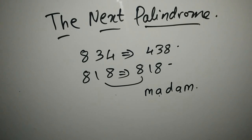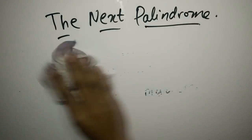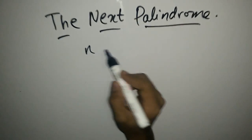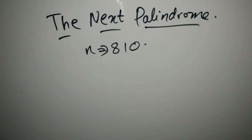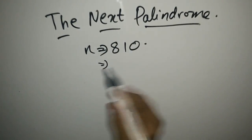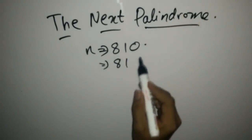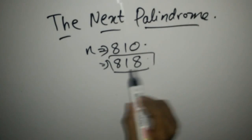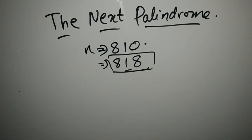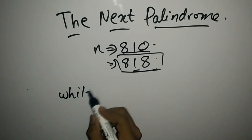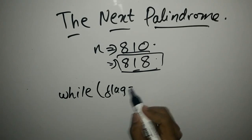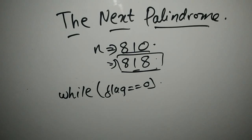In this CodeChef problem, we have to find the next palindrome. Our input will be a number N. Suppose we are given input 810 — we have to find the next palindrome to this number, which is 818. To solve this, we use the reversing logic we worked out. We use a loop: while flag equals 0, meaning we haven't found the palindrome yet, so we keep finding it.